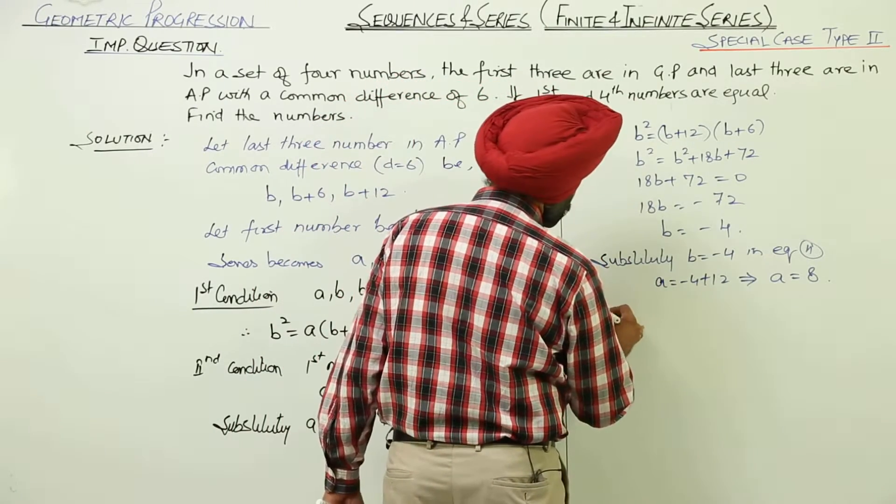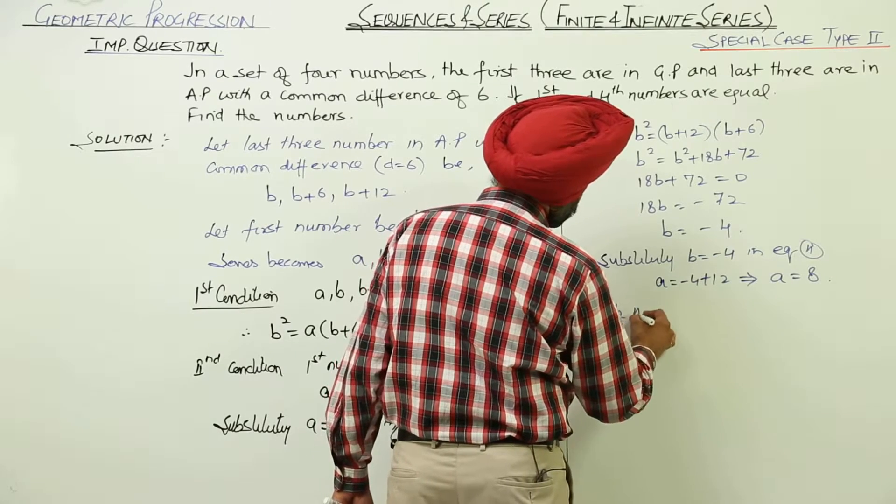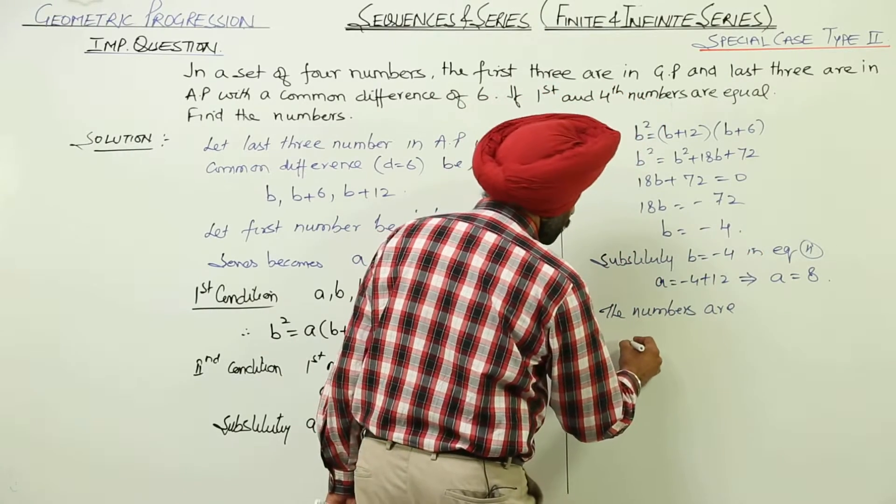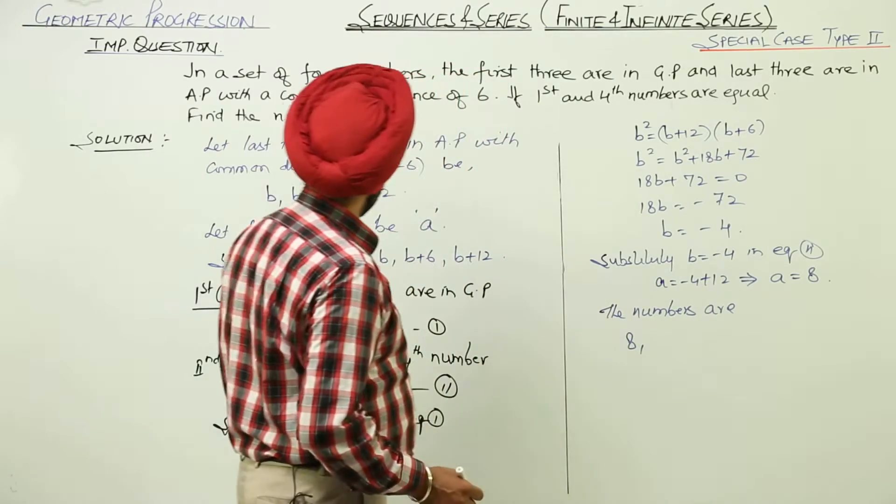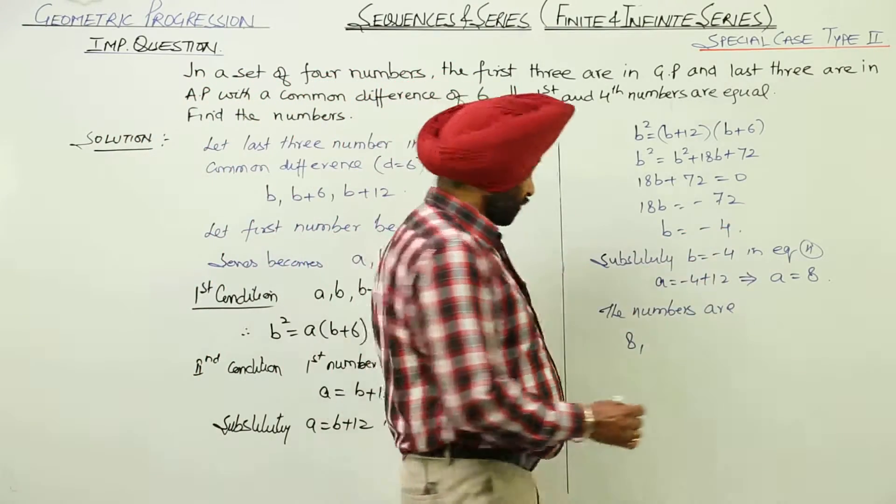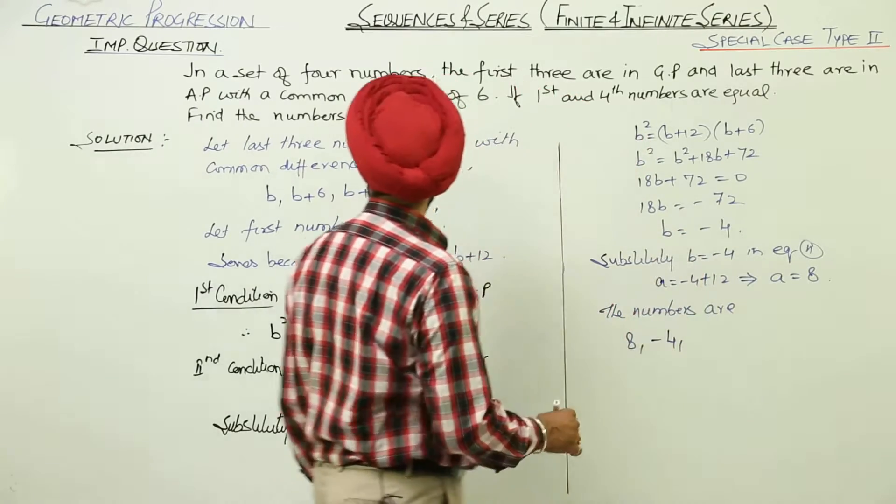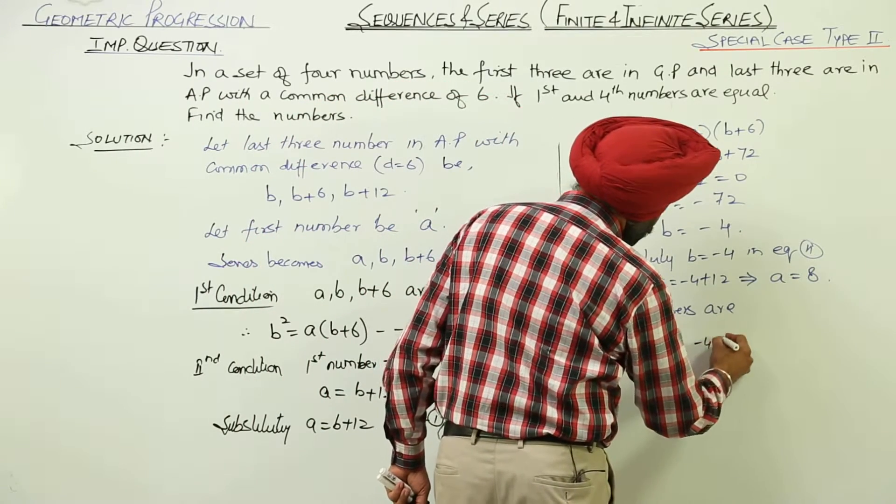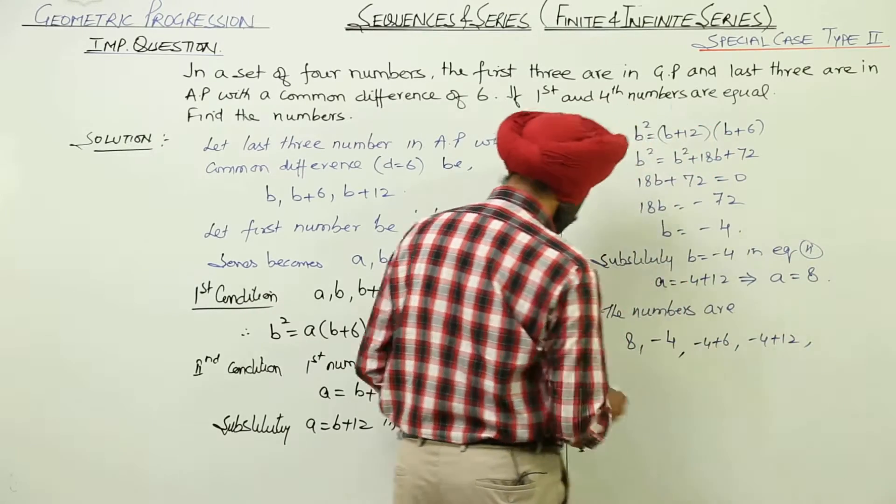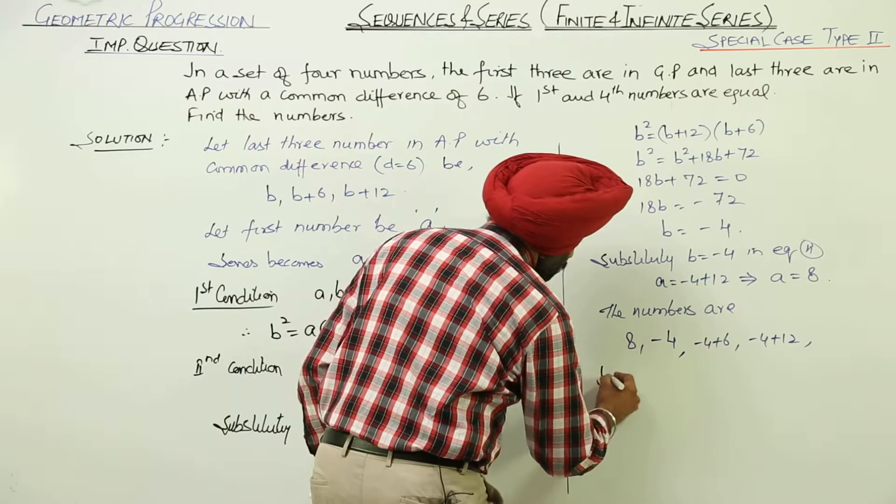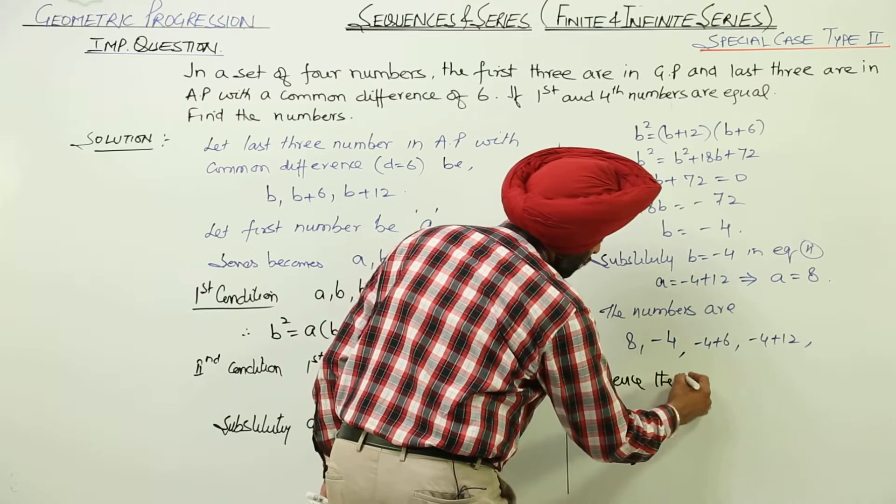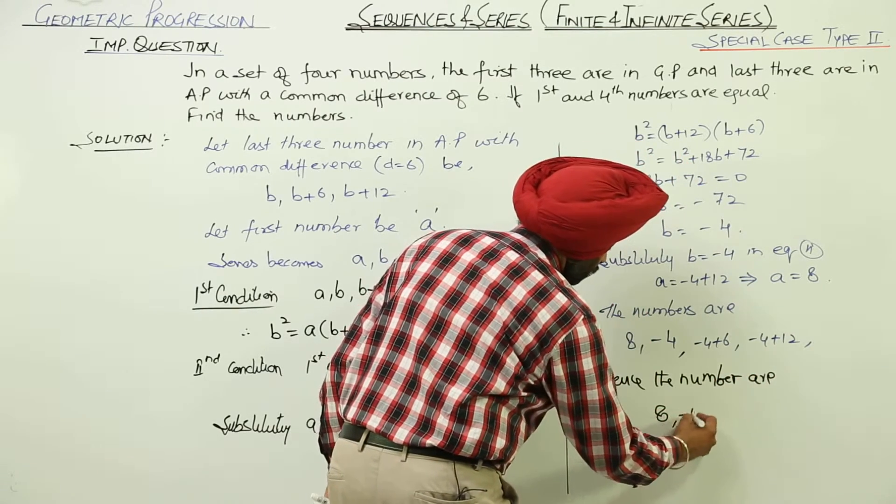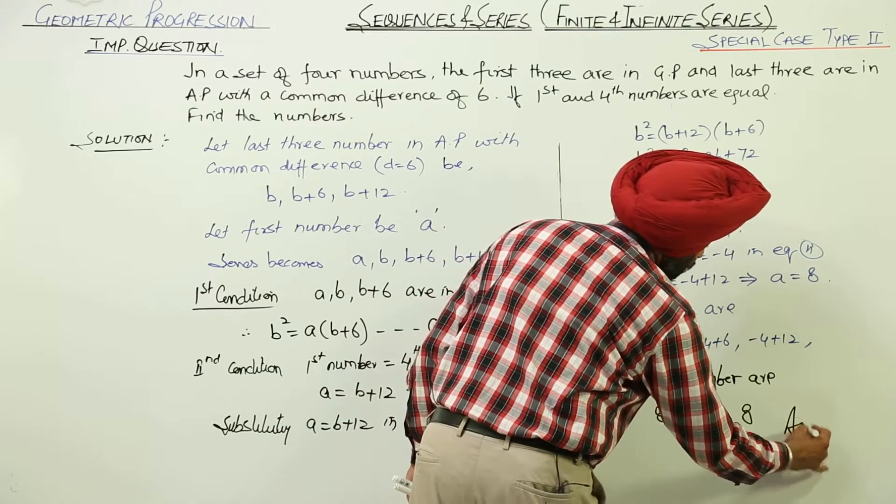The numbers are 8 is the first number. Then, we are having B. B we got as negative of 4. Then, we are having B plus 6 and then B plus 12. Minus 4 plus 6 minus 4 plus 12. Hence, the numbers are 8 minus 4, 2 and 8. This is the answer.